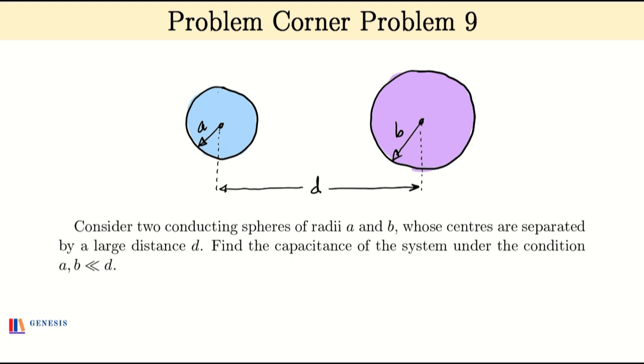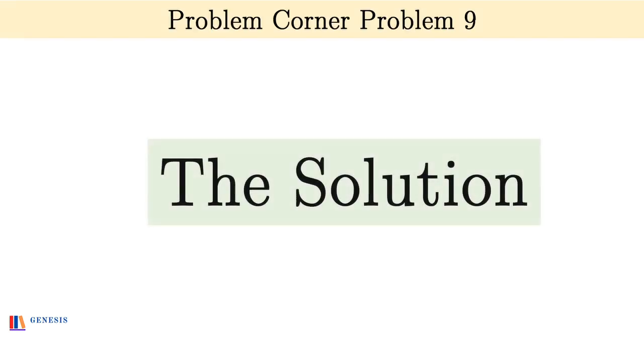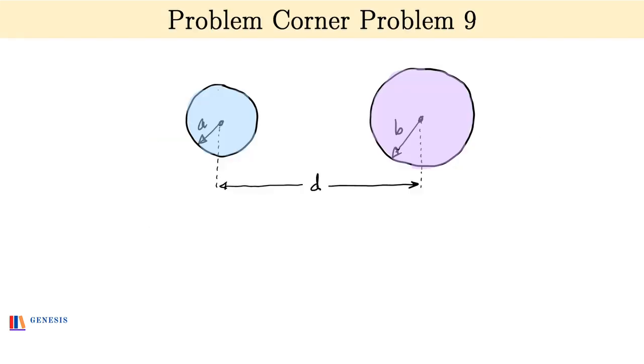I suggest you pause the video and try to do it on your own. We now go ahead with the solution. As the system is a capacitor and these spheres are its plates, we give plus Q and minus Q to them.